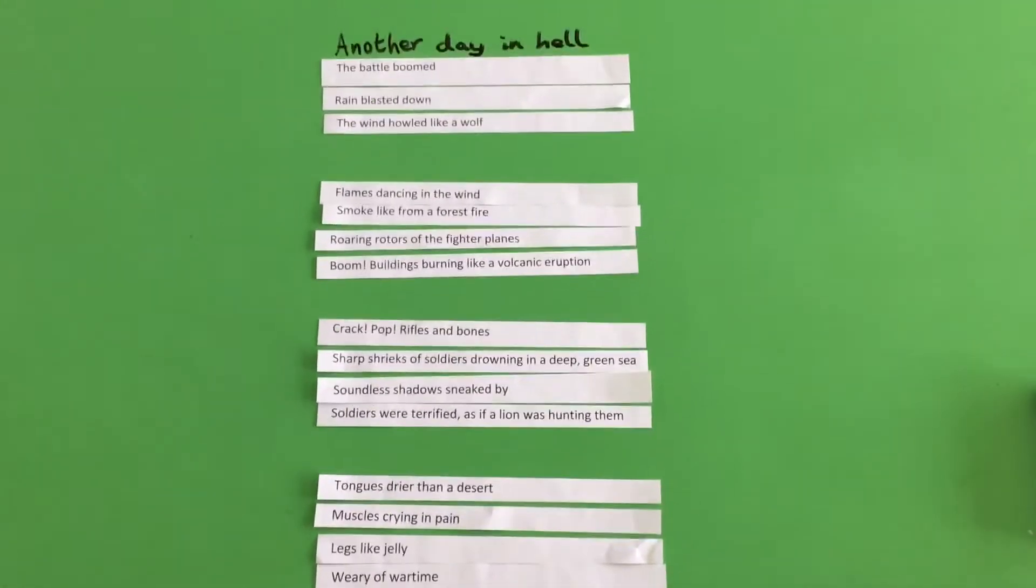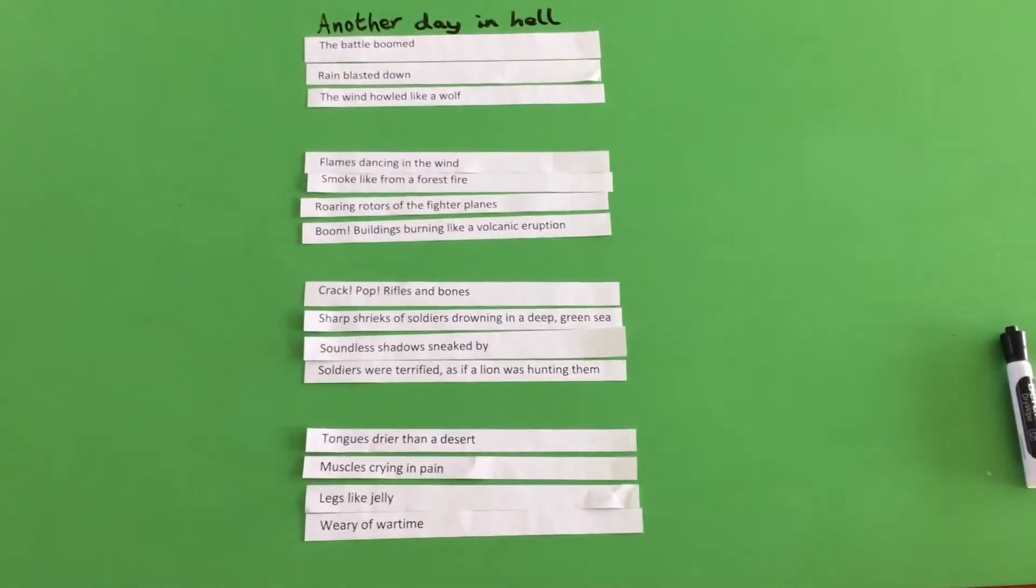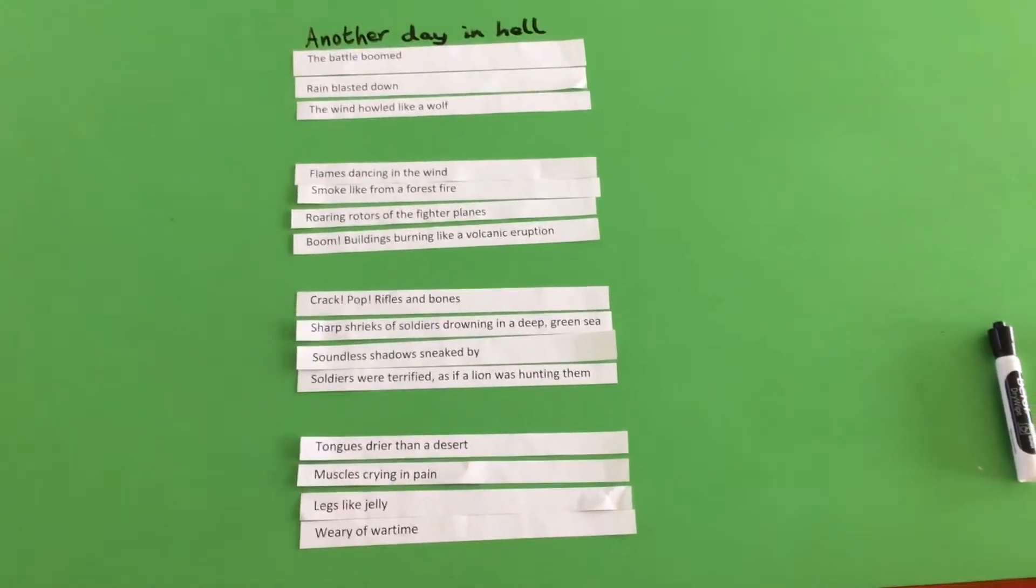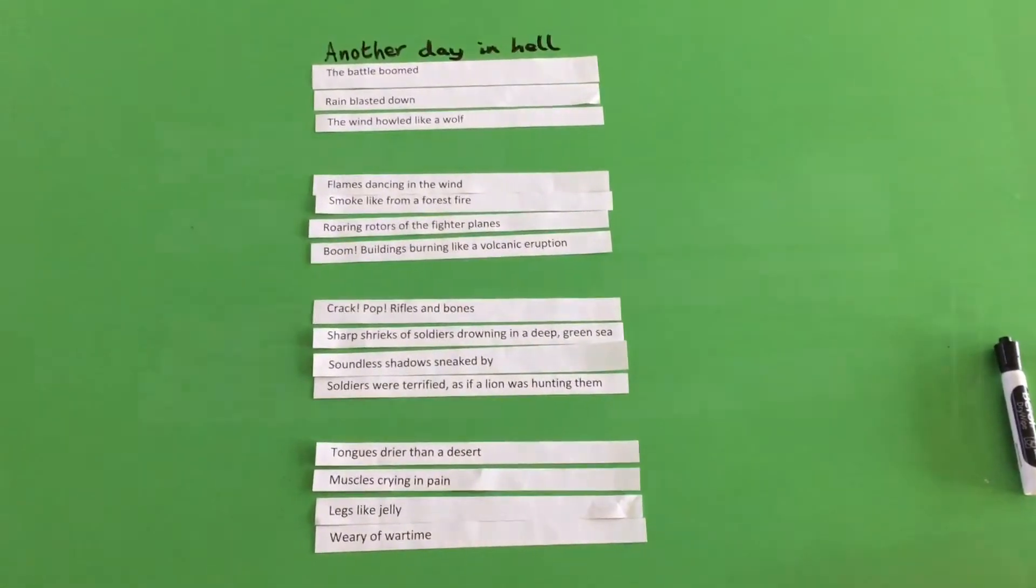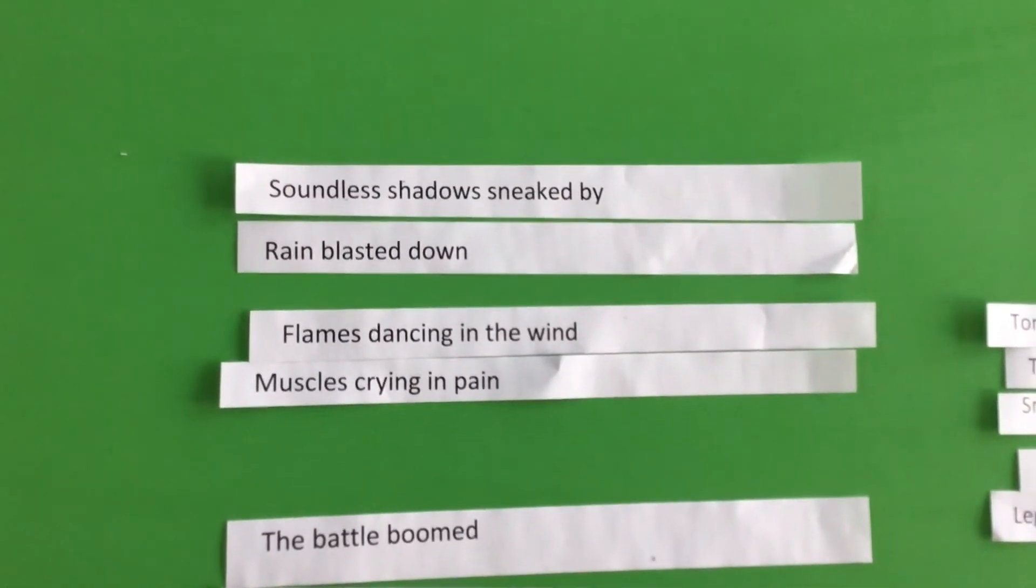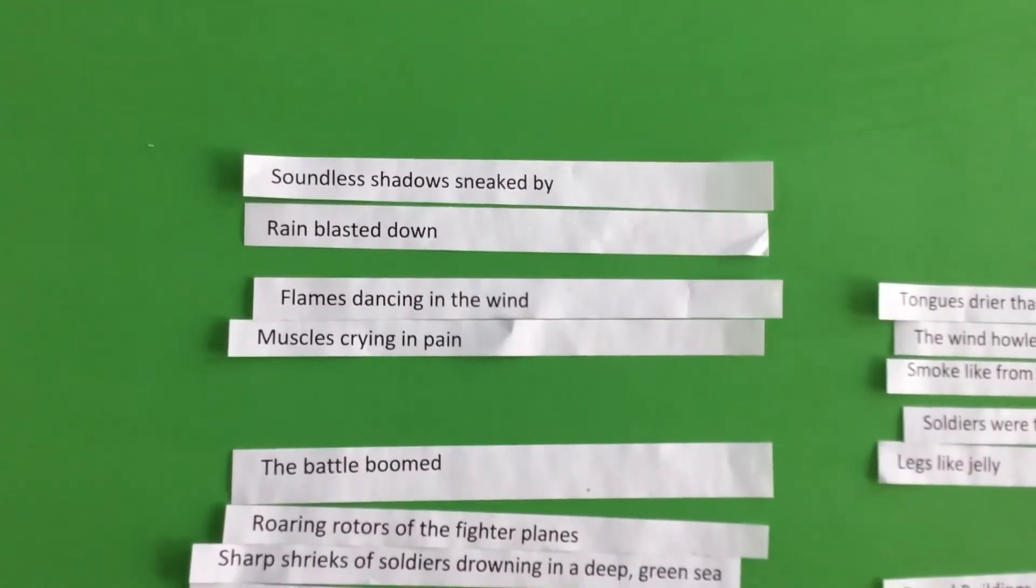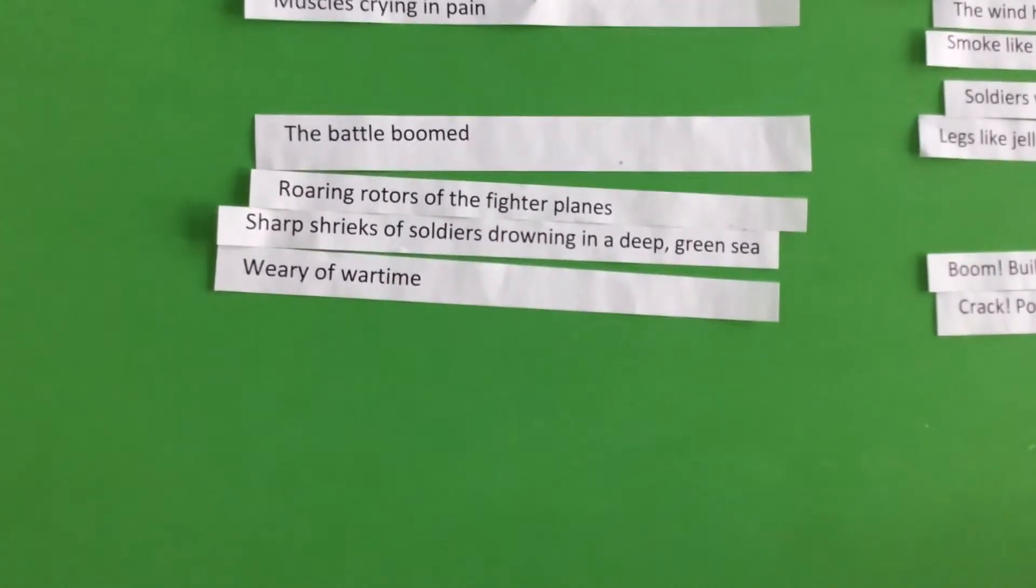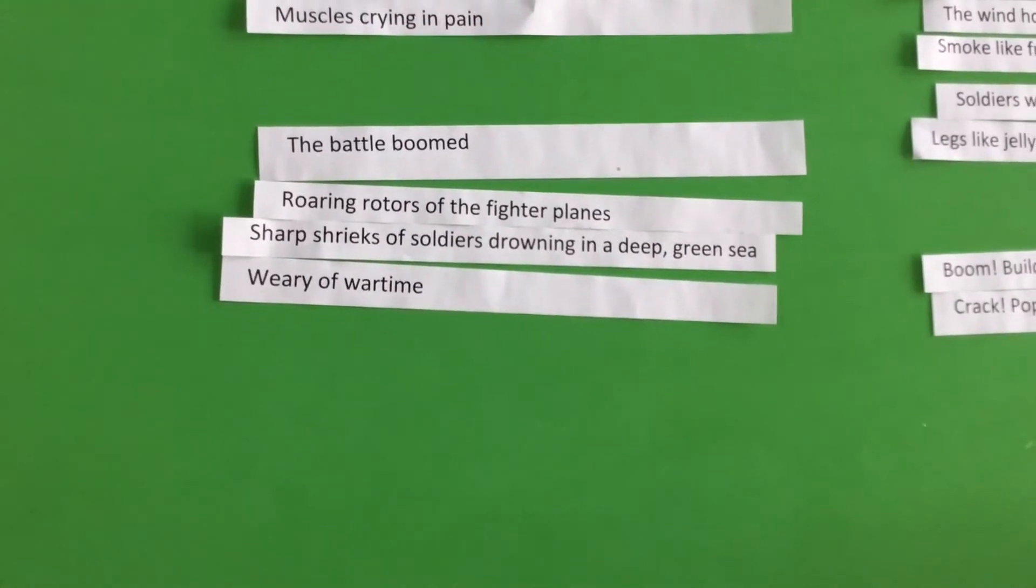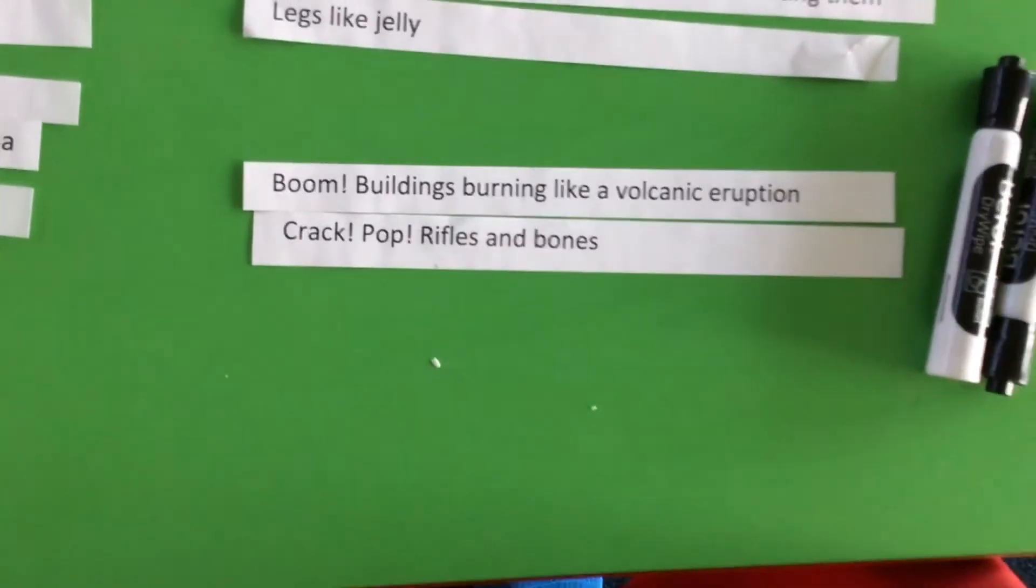So that's one way of arranging that work that we already have into a really powerful poem. As I said there are different ways that you can rearrange these lines that really can be done quite effectively. You can also group the lines by type, so which feature they show. We've got here the personification: shadows sneaking, rain blasting, flames dancing, muscles crying. We've got our alliteration: battle booming, roaring rotors, sharp shrieks, weary of wartime. We have our similes here and then some examples of onomatopoeia as well. So that's another way of grouping them.